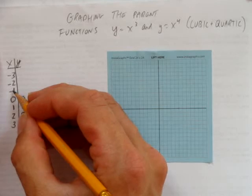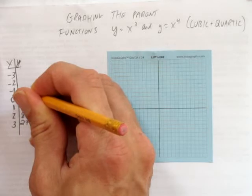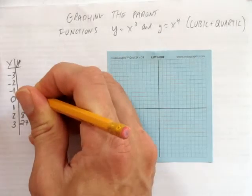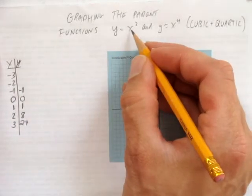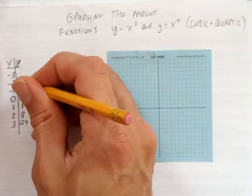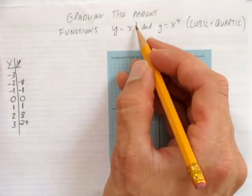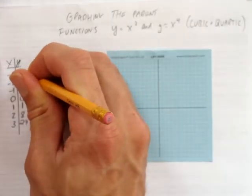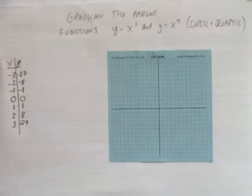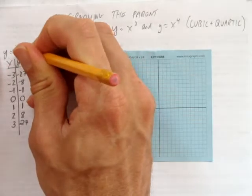When we cube negative 1, it's a negative times a negative times a negative, so you still get a negative result — negative 1 cubed is negative 1. Negative 2 cubed is negative 2 times negative 2, that's positive 4, times negative 2, which is negative 8. The result stays negative because the exponent is odd. So negative 3 to the power of 3 will be negative 27. That's the table for y equals x cubed, the cubic.